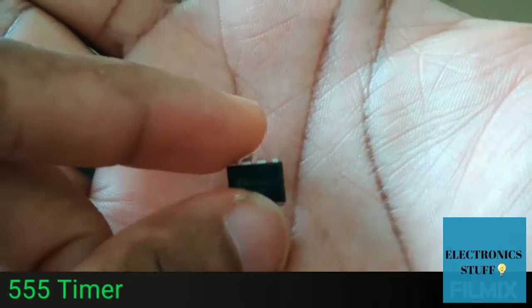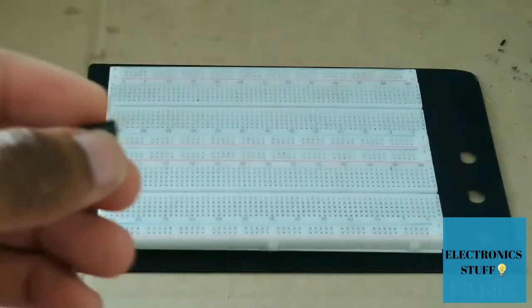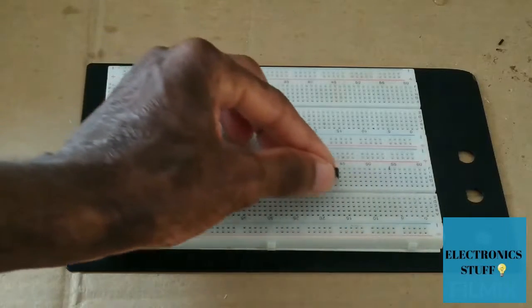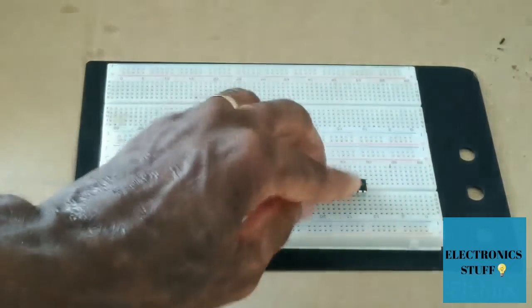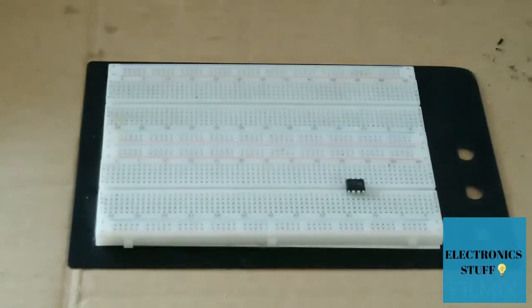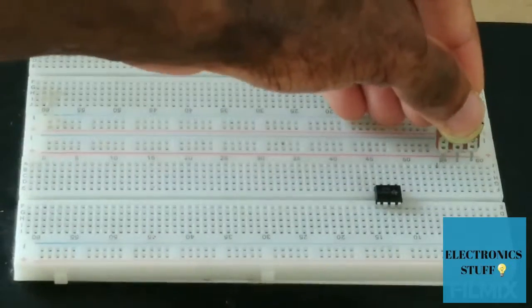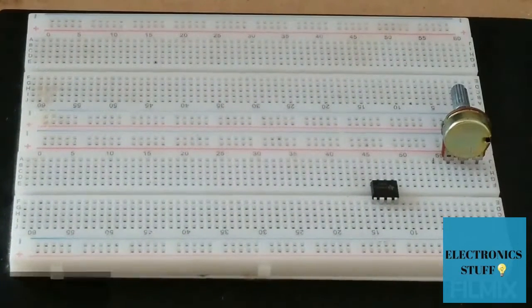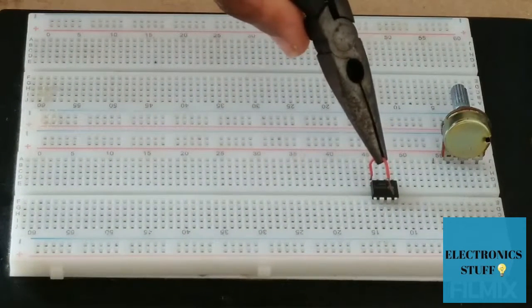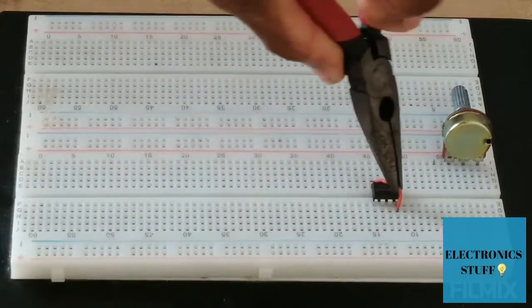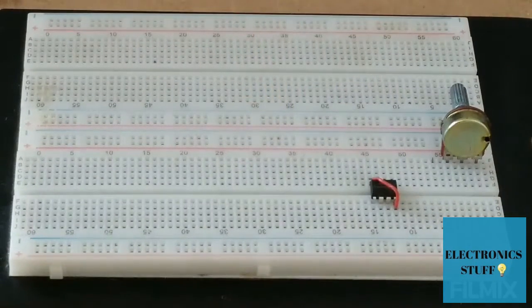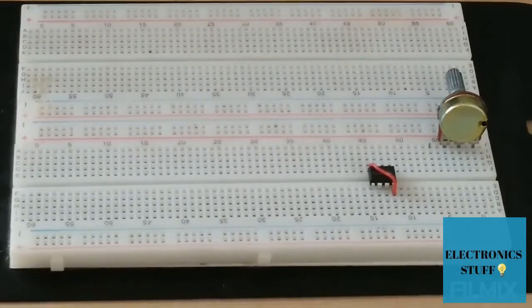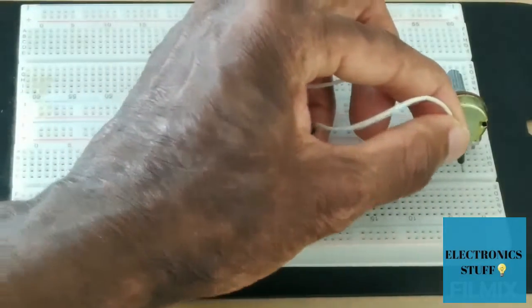We've got to have a 555 timer and a 5 kilohm potentiometer to adjust the voltage. Pin 4 is connected to pin 8 through this wire. The middle pin of the pot is going to...